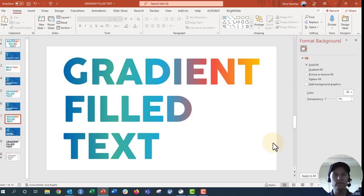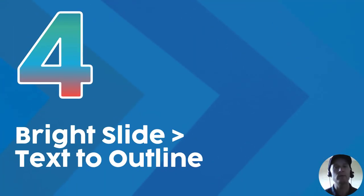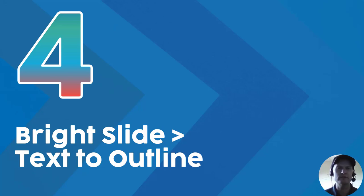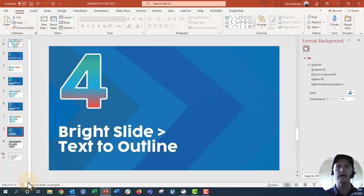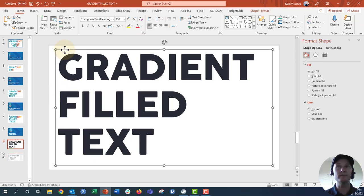That's way number three using the Merge Shapes Fragment option. Way number four is our final way and it's going to involve downloading a free PowerPoint productivity add-in called BrightSlide by a company called BrightCarbon. Go ahead and download that. This is way number four on how to make beautiful gradient filled text in PowerPoint. When you download the add-in BrightSlide, you'll have a new tab on the ribbon called BrightSlide. It has so many cool one-click features to help you be more productive in your PowerPoint design. Even if you don't have administrator rights, email your IT person and tell them you need this add-in — it's free and easy to download.